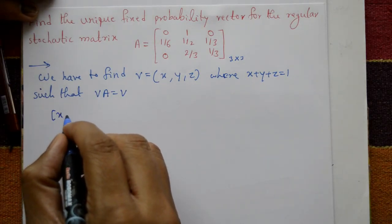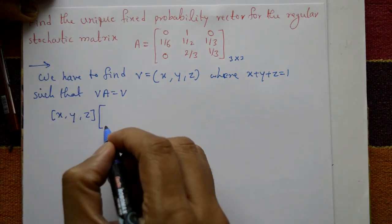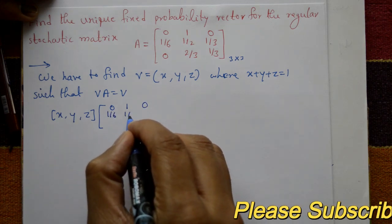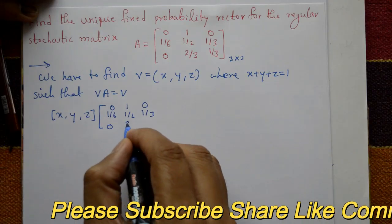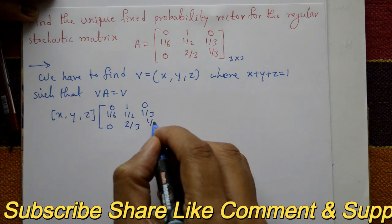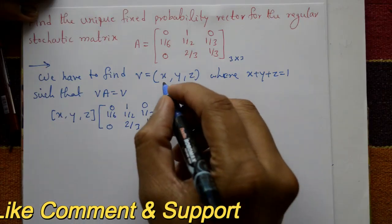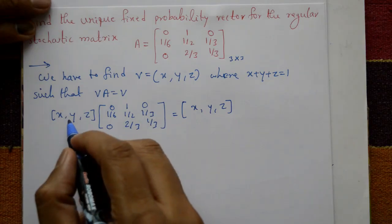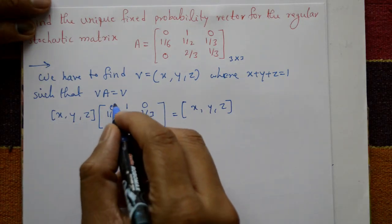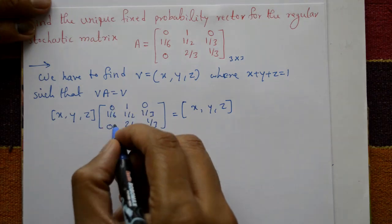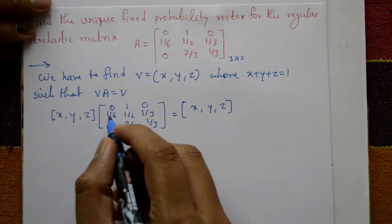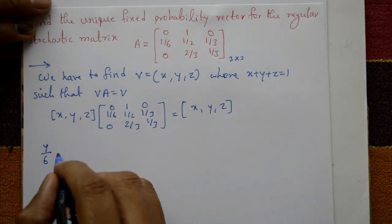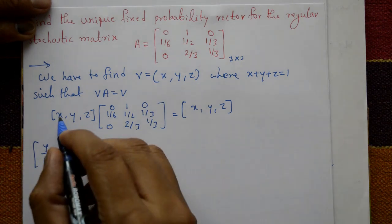So we compute [x, y, z] multiplied by matrix A: [0, 1, 0; 1/6, 1/2, 1/3; 0, 2/3, 1/3] equals [x, y, z]. Using row times column multiplication, the first element is x·0 + y·(1/6) + z·0 = y/6.